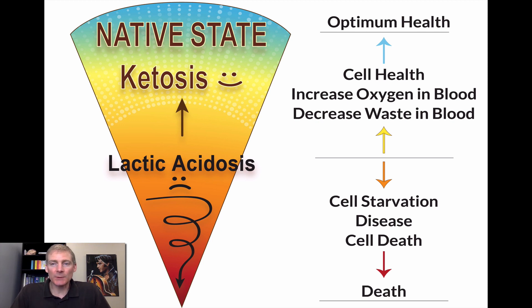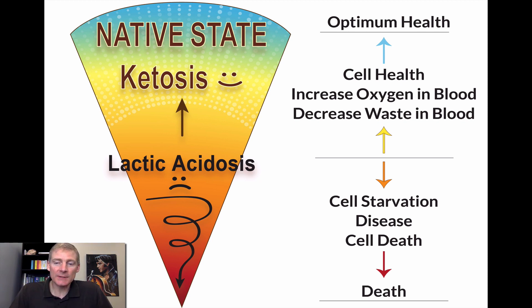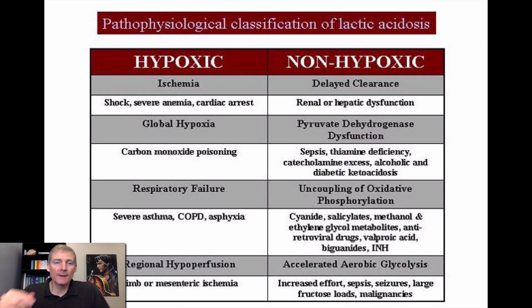We have cell health, increased oxygen in the blood, decreased waste in the blood. Then below, toward the orange and the red, we have lactic acidosis — that's cell starvation disease, cell death, and then body death. So this is a graphic that I made.